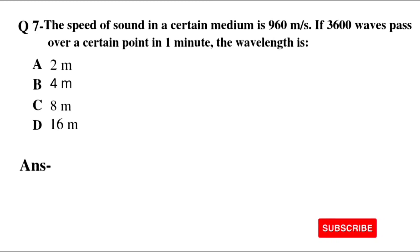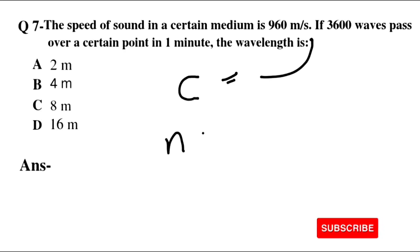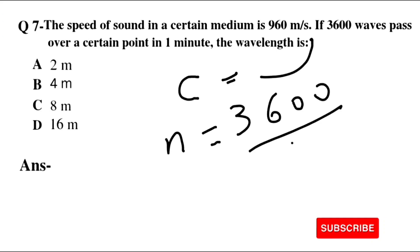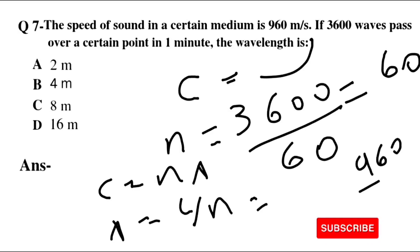Question number 7: Speed of sound in a certain medium is 960 meters per second. If 3,600 waves pass over a certain point in one minute, the wavelength is: Option A: 2 m. Option B: 4 m. Option C: 8 m. Option D: 16 m. First, calculate frequency: 3600 waves per 60 seconds = 60 Hz. Then using c = nλ, λ = c/n = 960/60 = 16 meters. Option D is the right answer.